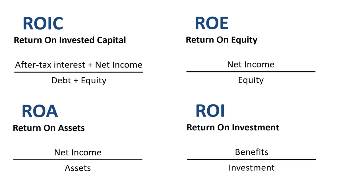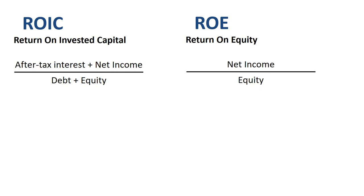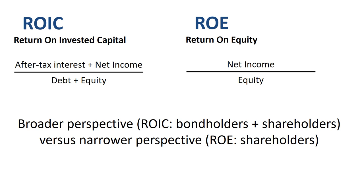Let's make some meaningful comparisons on a one-to-one basis. In the blue corner ROIC, in the red corner ROE — what is the difference between return on invested capital and return on equity? ROIC takes the broader perspective, focusing on returns for both bond holders and shareholders — in other words, debt and equity or invested capital — versus the narrower perspective of ROE, focusing specifically on returns for shareholders.